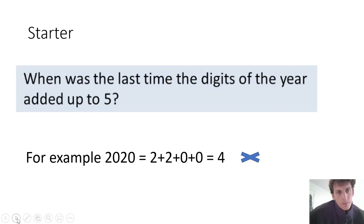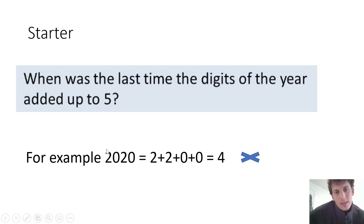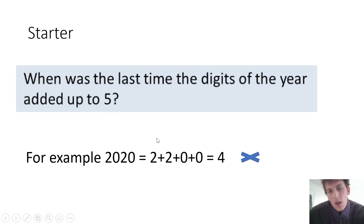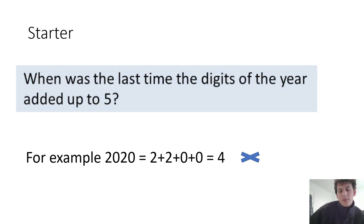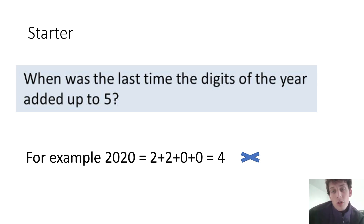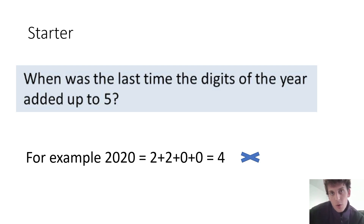We are now going to move onto our starter. When was the last time the digits of the year added up to five? For example, take 2020 — two plus two plus zero plus zero equals four, so that is not five. You need to find the last time the digits of the year added up to five. I'm going to tell you the answer tomorrow. So what I want you to do is write your answer in the comments below, and tell me what year you think it was when the digits added up to five. Please pause the video, complete that task, write a comment below, and then press play when you are ready to continue.